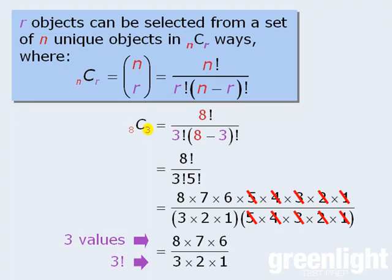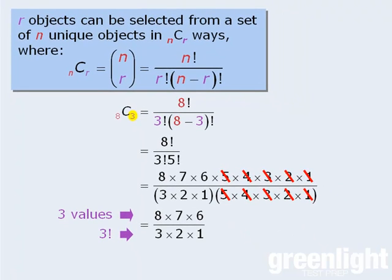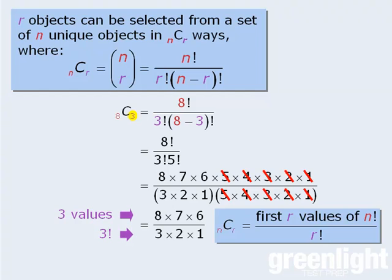So to generalize the role that R plays in calculating combinations, we can say that the value of N choose R will always be equal to the first R values of N factorial over R factorial.